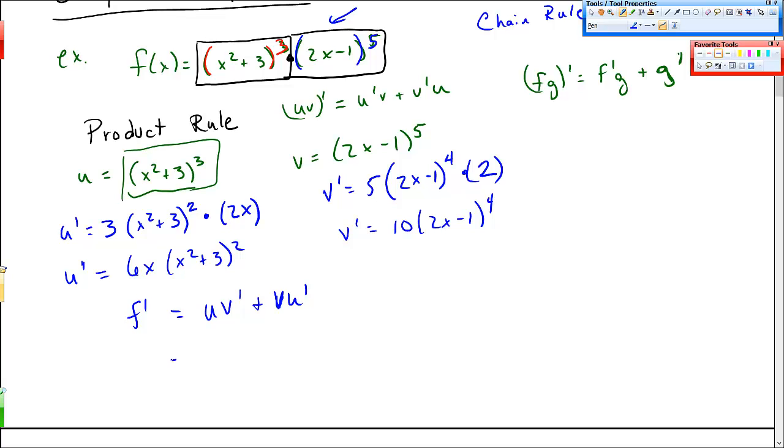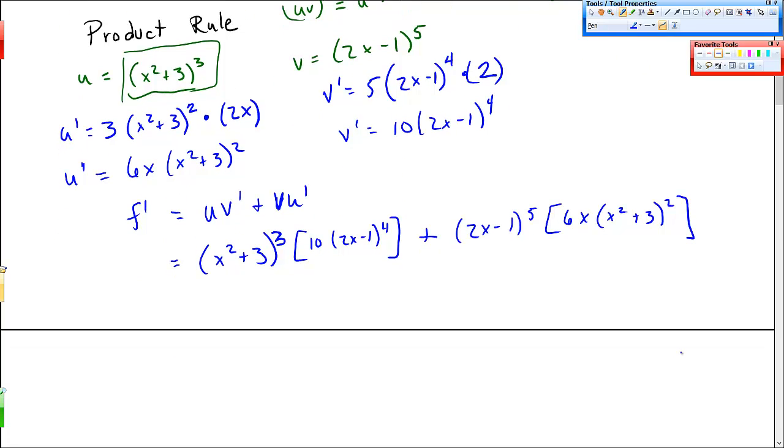So I'll put these pieces back together. So u is x squared plus 3 cubed. V prime is 10 times 2x minus 1 to the fourth. And then plus, so I'm doing u v prime plus v. 2x minus 1 to the fifth is v. And u prime is 6x, x squared plus 3 squared.